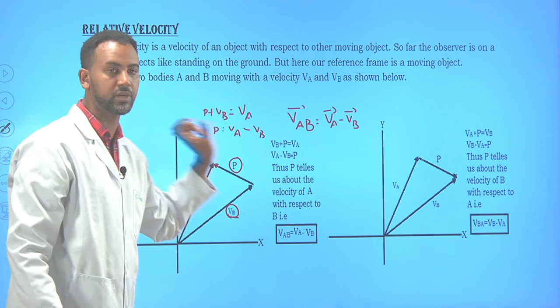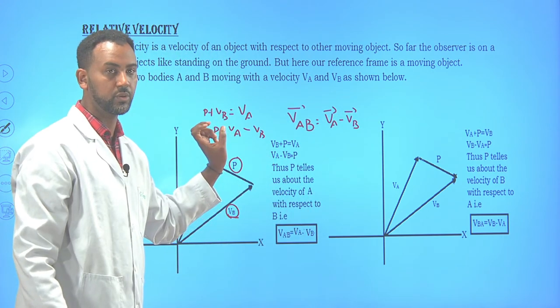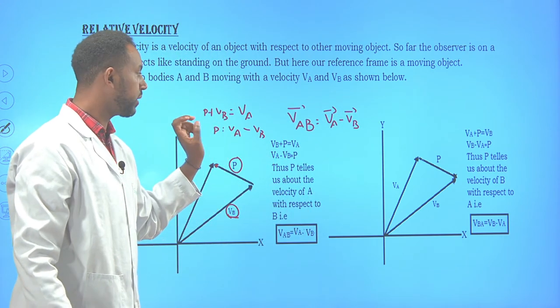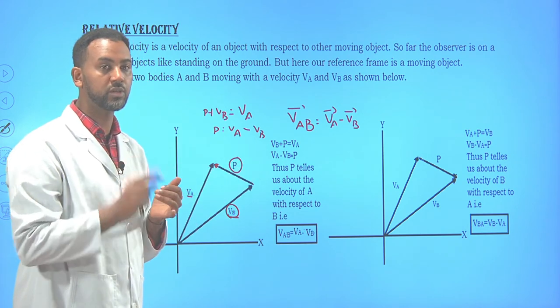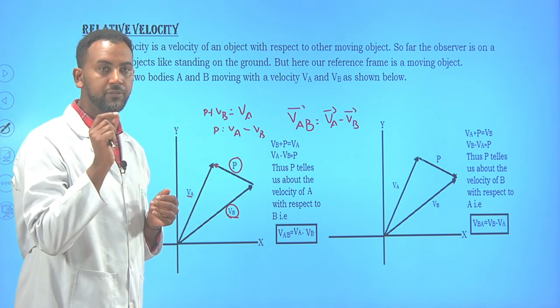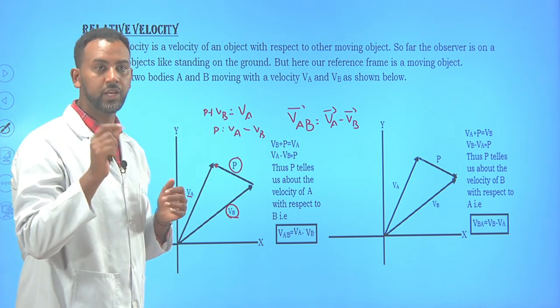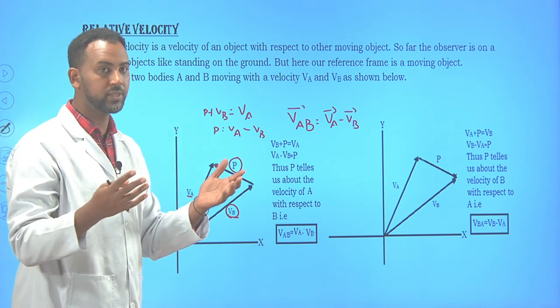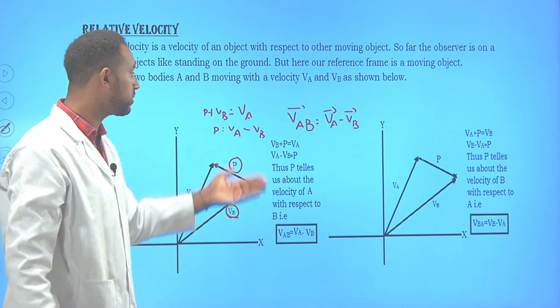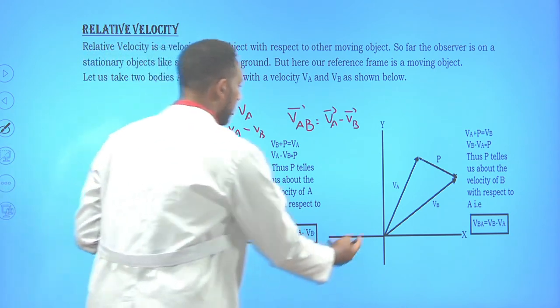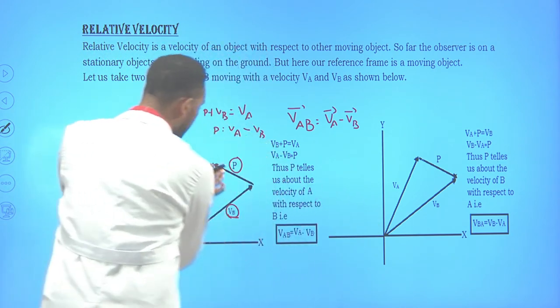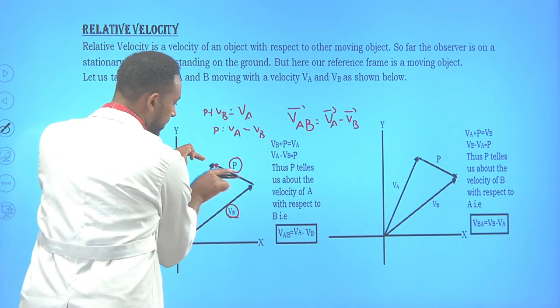It is also possible to reverse this. For example, if we change the direction, the resultant becomes V_B. The velocity V_A plus P should give V_B, and if you move P to the other side, P = V_B − V_A.